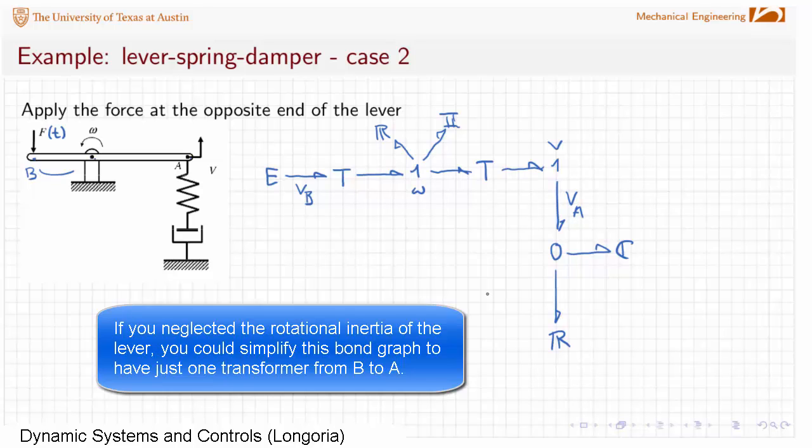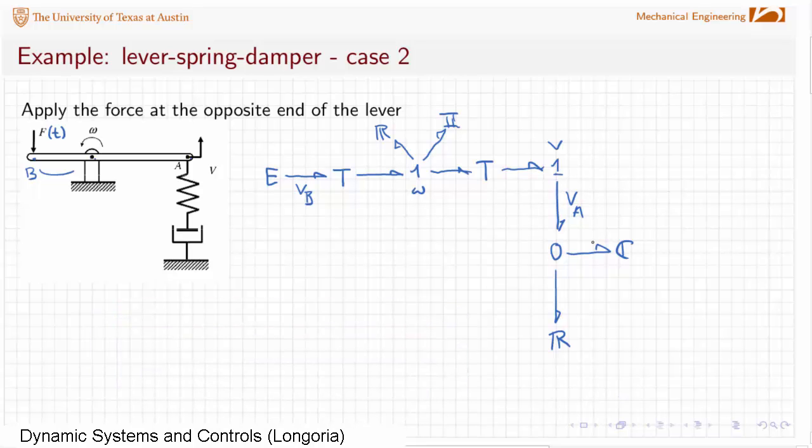And note, I have a one here sticking out, and we'll look at ways to eliminate extra ones this way that don't have any other elements connected to it. There's ways to eliminate this, but let's just keep it there for now because it identifies a velocity point for us. We could just go directly from the transformer right into that zero. But hopefully this helps you to see a little bit better how to structure this graph.